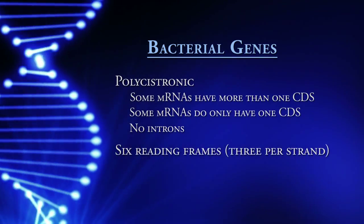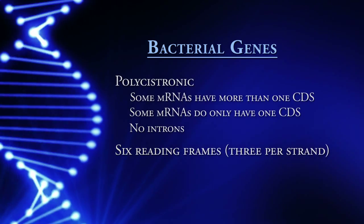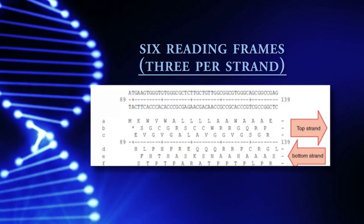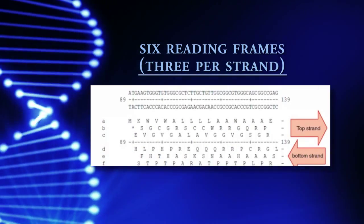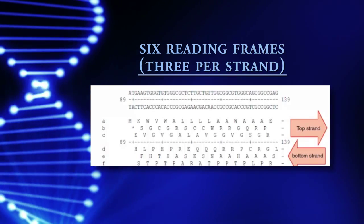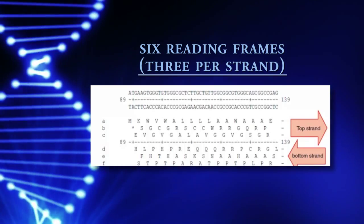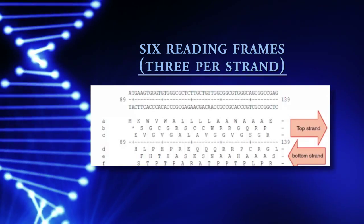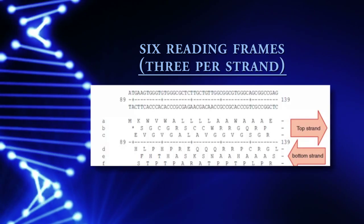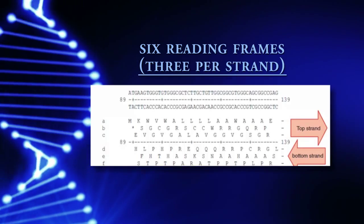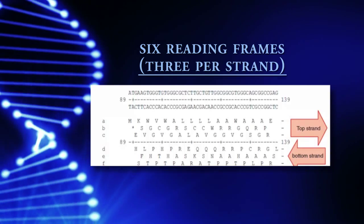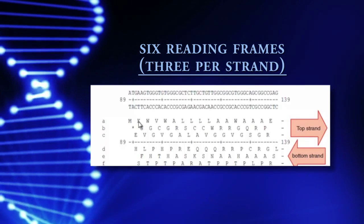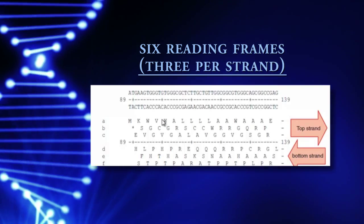There are six reading frames that protein coding genes can be on. If this is a particular sequence of double-stranded DNA, recall that only one strand will be in the database. Reading frames A, B, and C represent the potential amino acid patterns on the forward strand. A triplet in DNA is sufficient to code for one amino acid. Starting at position one gives M, K, W, V, W, A. Starting at the second position gives a stop codon, S, C, G. Starting at the third position gives E, V, G, V. Starting at the fourth position would give K, W, V — back to the same pattern.